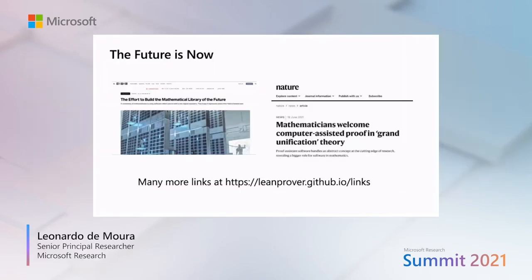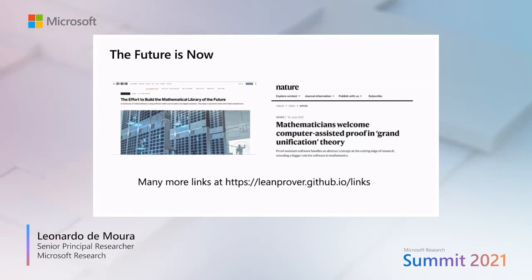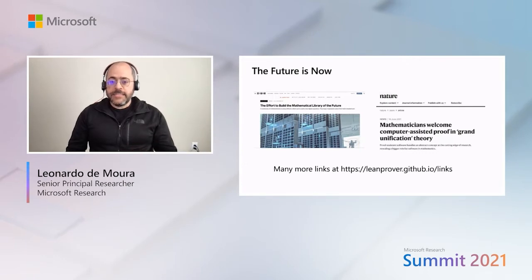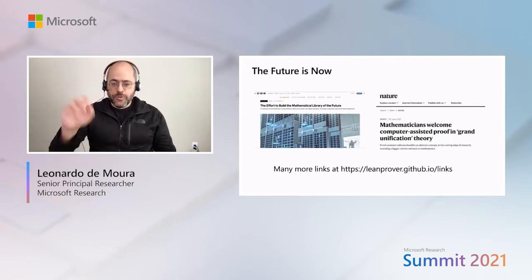The future is now. The Lean projects have impacts today. Here you have two articles — the first one in Wired magazine describes the efforts of building Mathlib and interviews many mathematicians in the Lean community. Mathlib is the foundation for more ambitious projects, like the liquid tensor experiment that has been recently reported by Nature. There, the Lean community assisted Peter Scholze, a Fields Medalist, to ensure his new result is correct. The theorem he cared about was so complex that not even he could navigate it. We will learn more about this project when Kevin Buzzard does a deep dive.